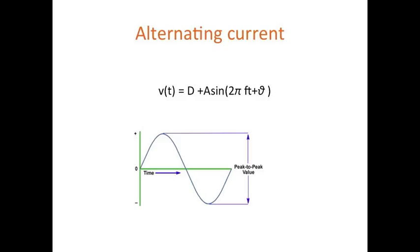D refers to the DC offset, A the amplitude, F the frequency and theta is the phase. The diagram is a way of visually representing this formula. It shows that the wave follows a sinusoidal curve with both a positive and negative maximum.